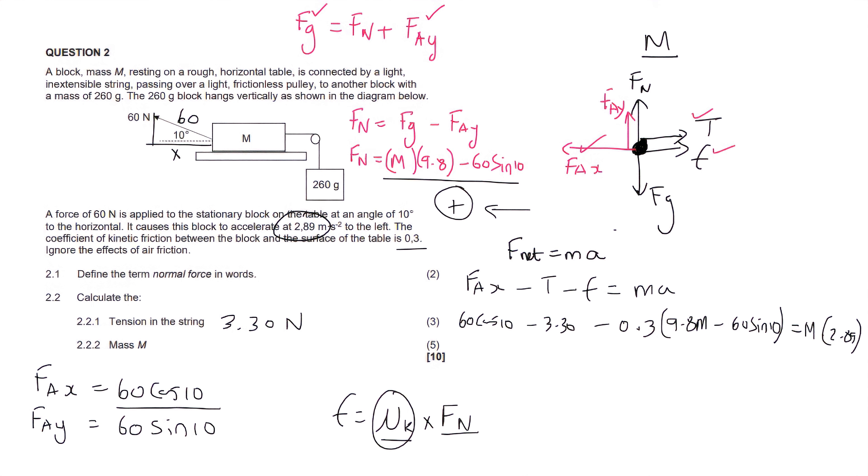And so now what we can do is we can just simplify a little bit. So I'm going to type this on the calculator, but I'm not going to round off to two decimal places just yet. I'm going to keep at least, I don't know, I'll keep four decimal places. Some people like to store the answer in their calculator. You can do that as well. You can go 78.84. I'm going to keep the first five decimals. Minus, and then I'm going to multiply this inside. So that's going to become minus 0.3 times 9.8, which is 2.94. That does round off. To M, I mean, times the mass, plus, because this becomes a plus. 0.3 times 60 sin 10. And that I'm going to keep five decimals. So that's 3.12566. And then that's equal to 2.89 M.